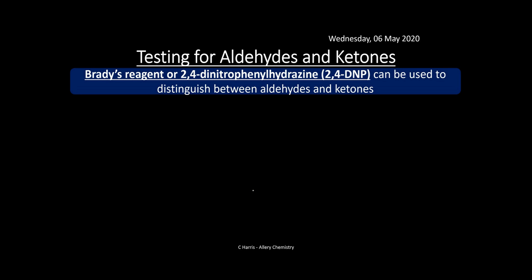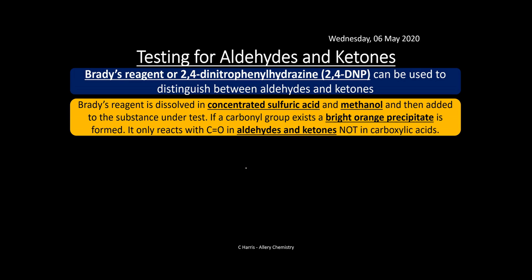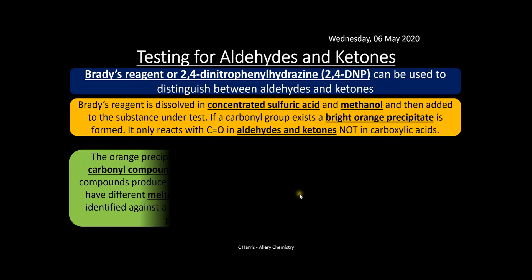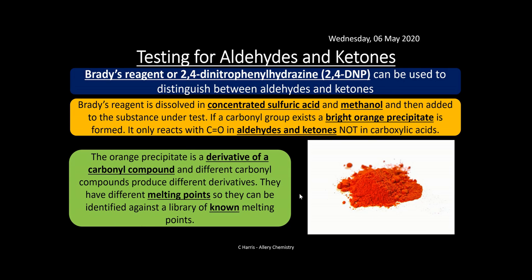Brady's reagent — or 2,4-dinitrophenylhydrazine, also called 2,4-DNP — can be used to test for carbonyl compounds. Brady's reagent is dissolved in concentrated sulfuric acid and methanol. It's then added to the substance under test. If a carbonyl group exists, a bright orange precipitate is formed. Importantly, it only reacts with C=O groups in aldehydes and ketones, not in carboxylic acids.